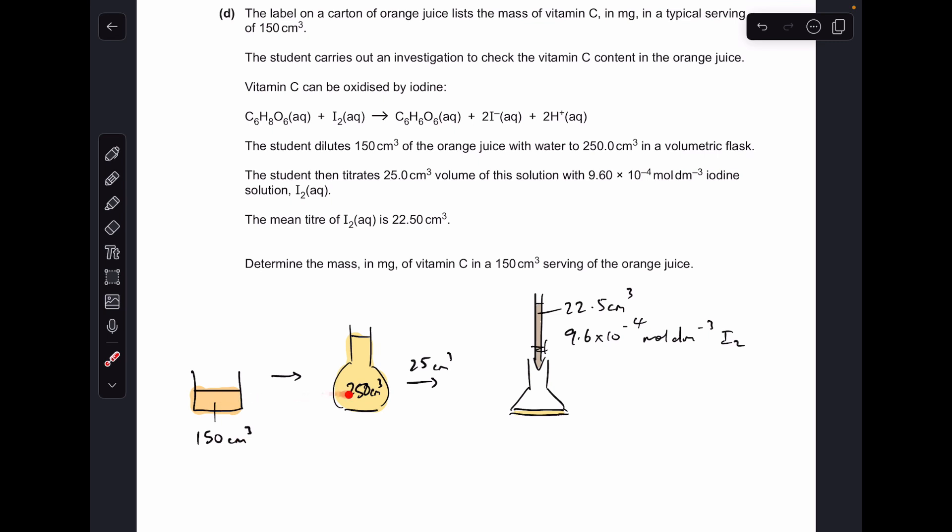That goes into a volumetric flask and then filled up to the mark with water, so it's going to look less orange. This is your diluted orange, and then 25 cm³ has gone into the conical flask and it's titrated against iodine. We've got the equation for that reaction there.